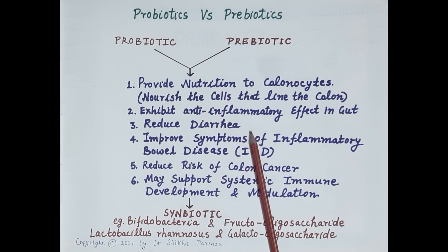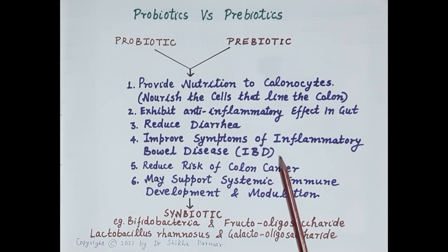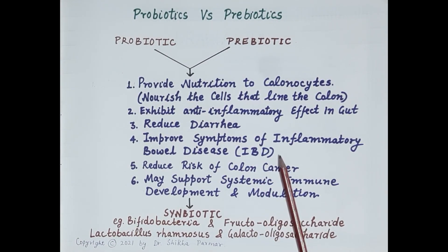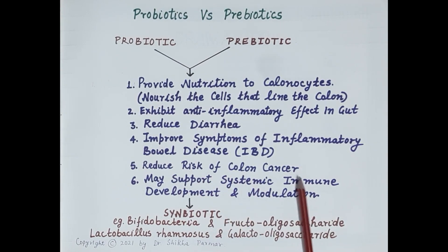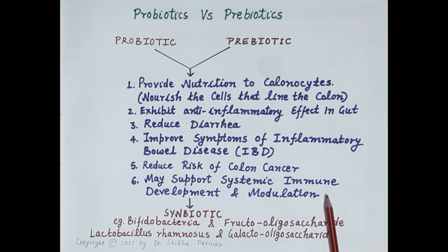Probiotics and prebiotics regulate bowel movement by reducing the incidences of diarrhea. As they exhibit an anti-inflammatory effect, they improve symptoms of inflammatory bowel diseases like ulcerative colitis and Crohn's disease. They also strengthen gut immunity, reduce the risk of colon cancer, and may support systemic immune development and modulation.